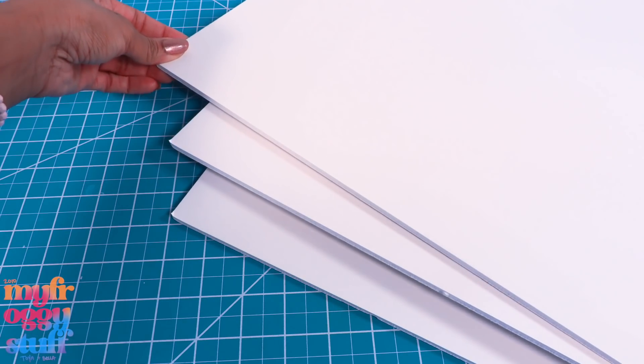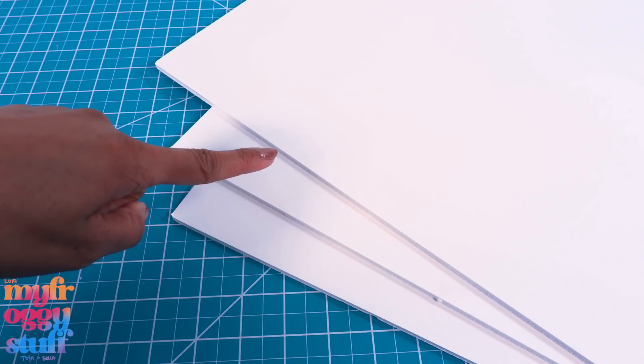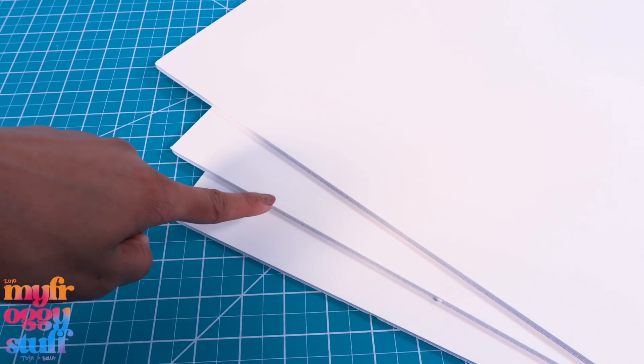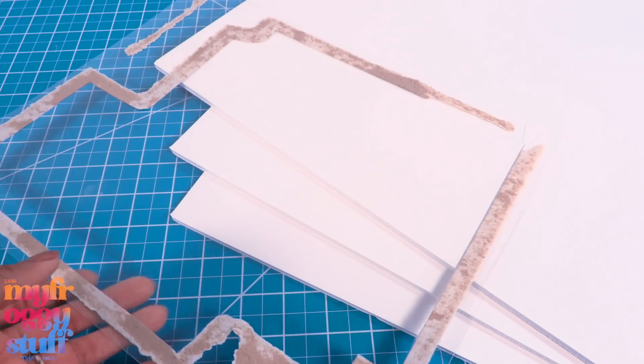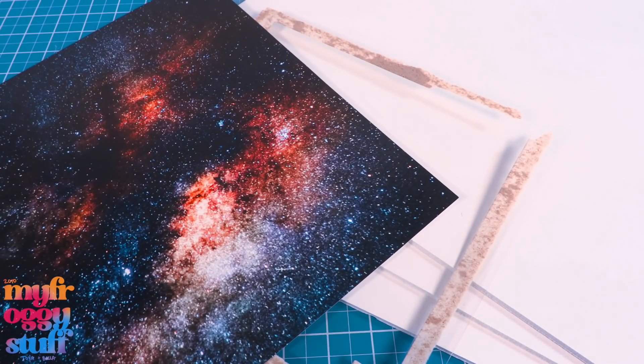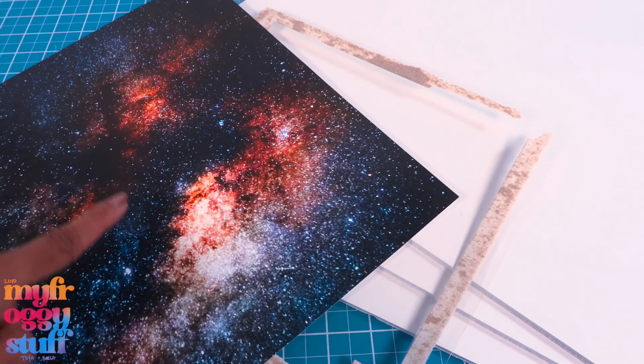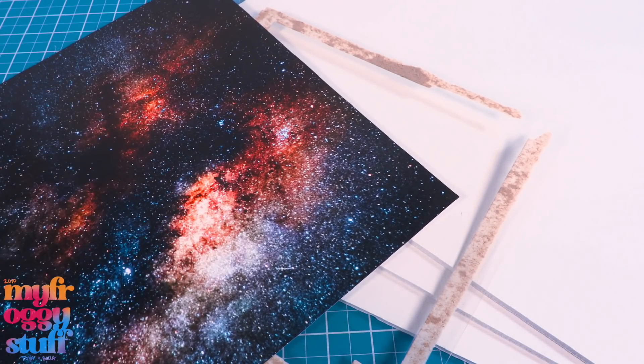For this project we are using foam board, clear plastic from packaging, and a picture of space. This is a piece of scrapbook paper I bought online. Let's get started.